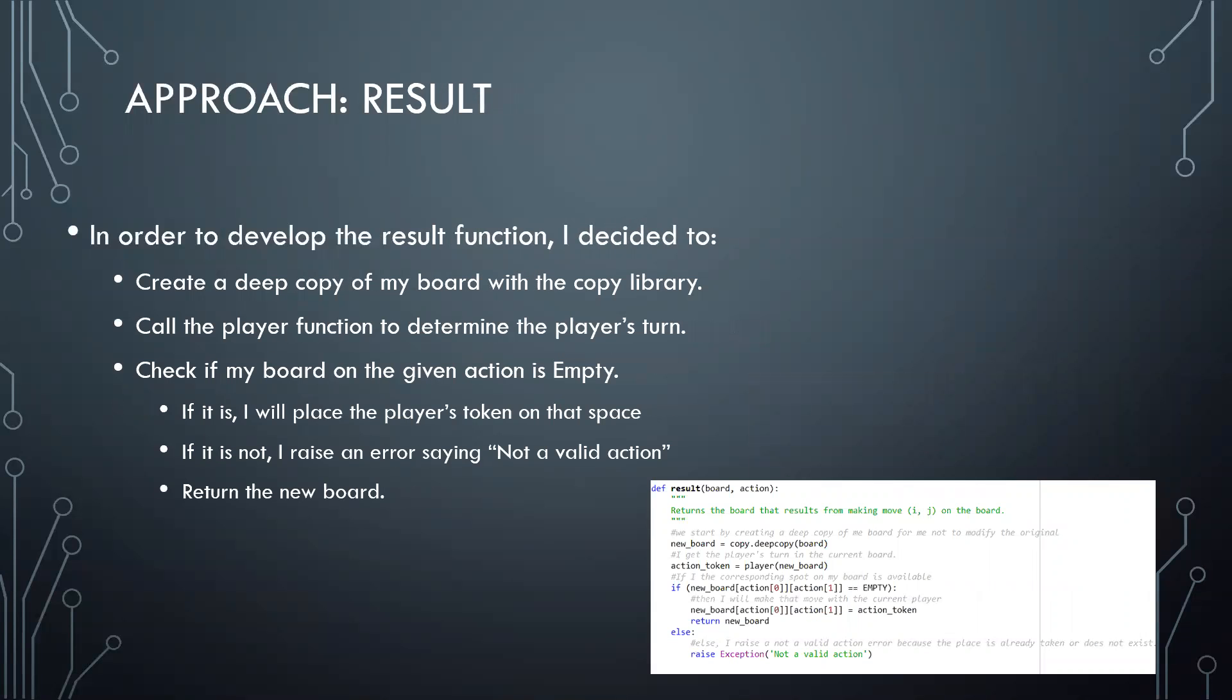My results function. I first create a deep copy of my board with the copy library to prevent my original board from being modified. I call the player's function to determine the player's turn and then check if the given action on my board is empty. If that position of my board is empty, I can place the player's token in that space. If not, I raise an error saying that it is not a valid action.